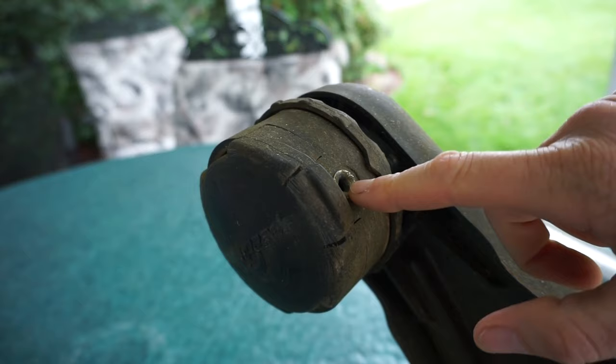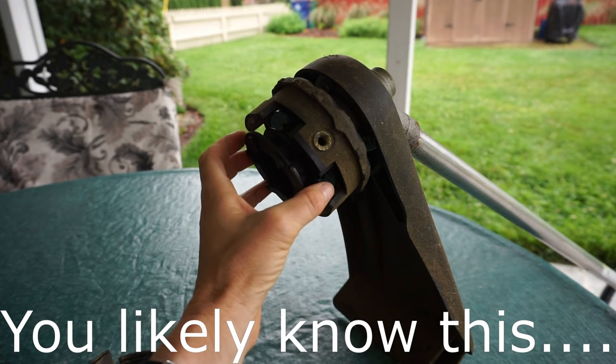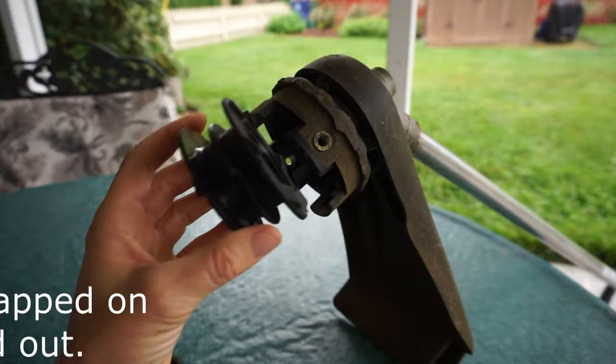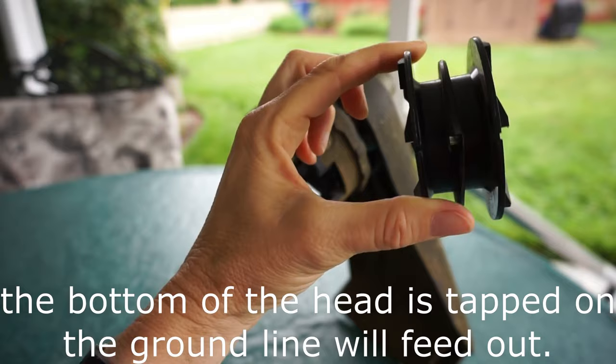I've removed the bottom cover and when in this position, you can see that a piece of line can be pushed through both eyelets to the center of the head and through this slot in the center of the spool.